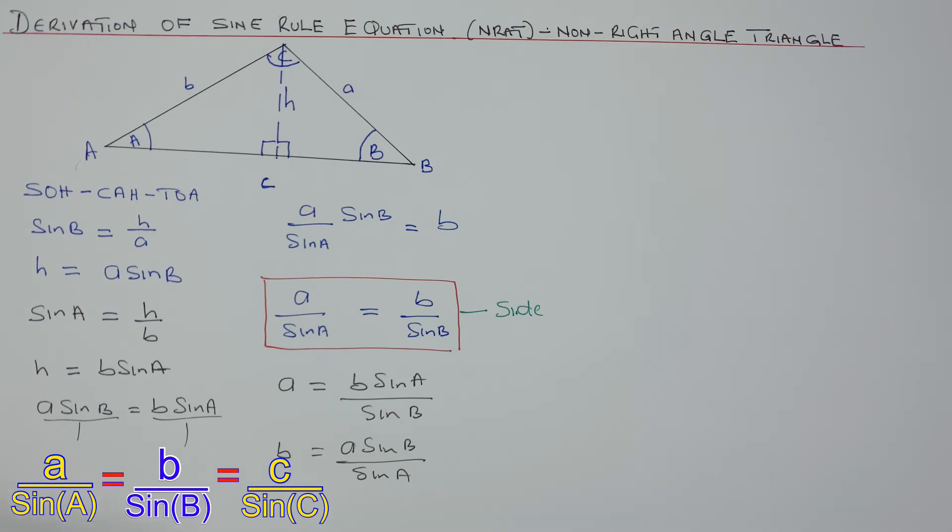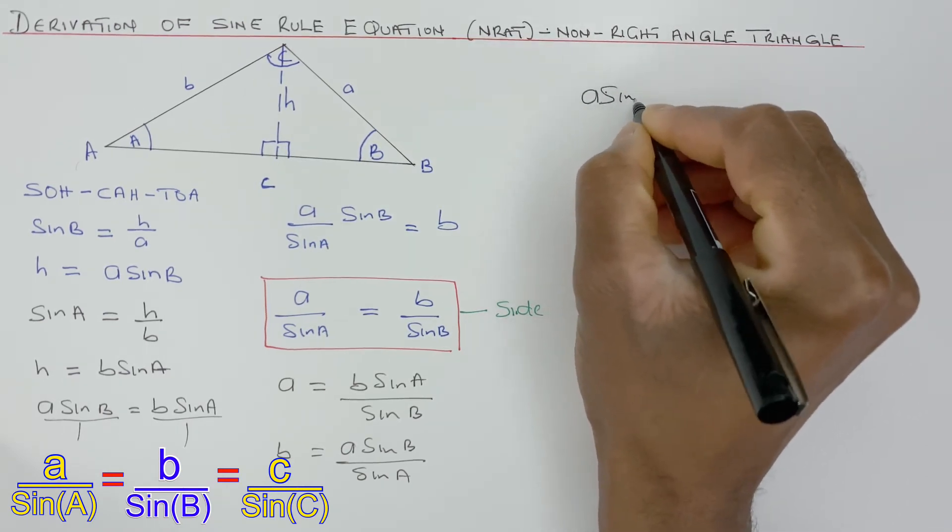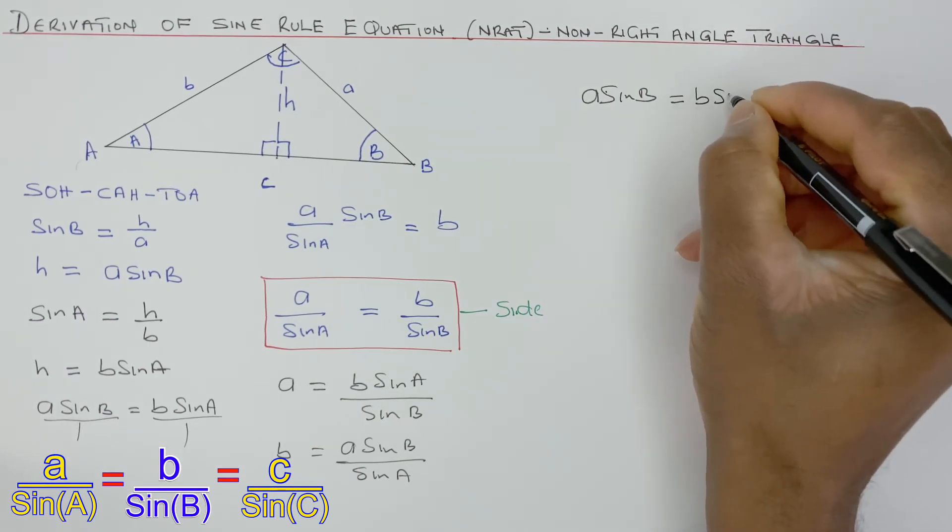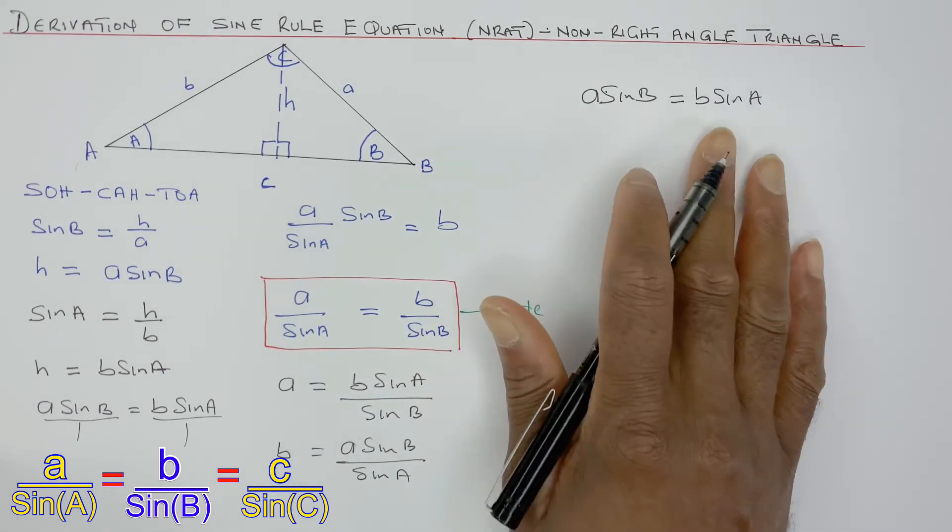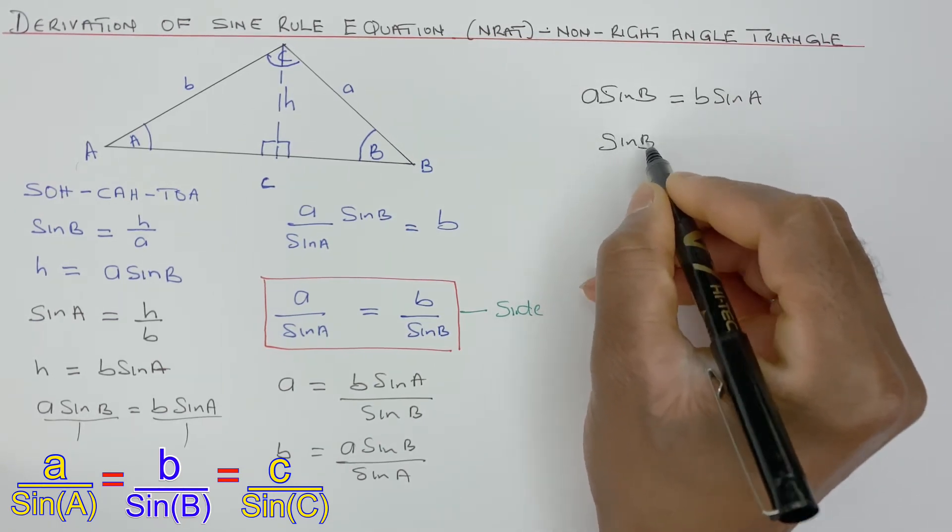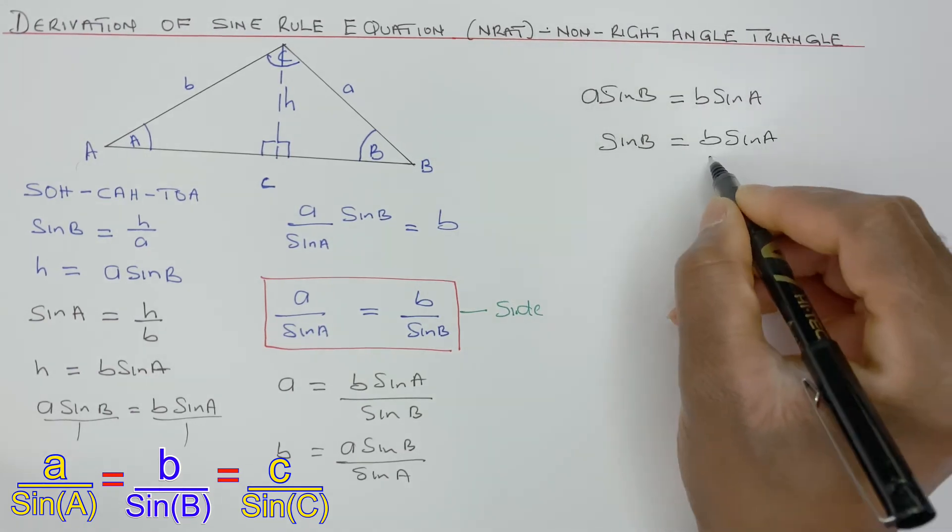The other way to write this equation is not to divide by sine of A and B, but rather to divide by B and A. We know A sine B equals B sine A. So if we divide both sides by A and B, if I divide that by A first, I'll get sine B equals B sine A over A.